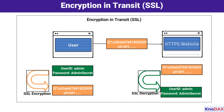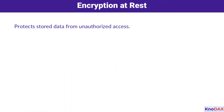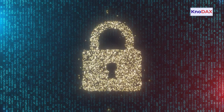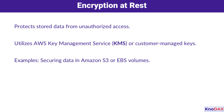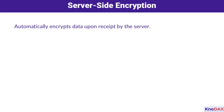Now that we understand encryption in transit, let's see how encryption protects data at rest and in use. Stored data, whether in databases, S3 buckets, or EBS volumes, needs protection too. AWS makes this simple with services like Key Management Service (KMS) or your own customer-managed keys. For example, data stored in Amazon S3 can be encrypted with just a few clicks. But who does the encryption, and when? That brings us to server-side versus client-side encryption.